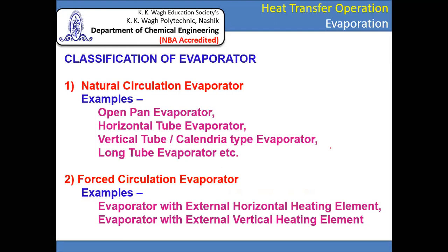The natural circulation evaporator means the equipment in which the circulation of thin liquor is performed in a natural way with the help of density difference, temperature, and pressure parameter differences. If it is forced by an external agency like a heating element and pumping arrangement, using a shell and tube heat exchanger to force the thin liquor from one point to another, then it is called a forced circulation evaporator. If the thin liquor flows naturally, it is called a natural circulation evaporator.